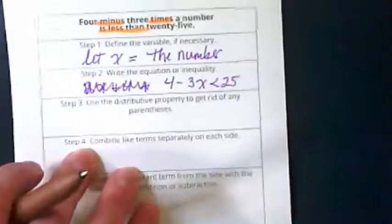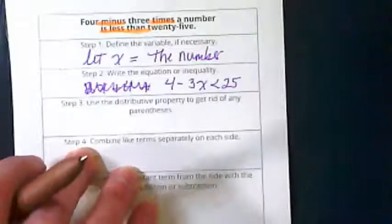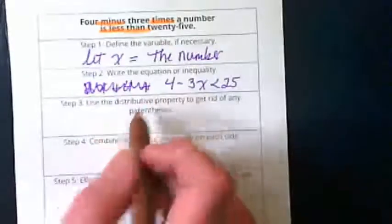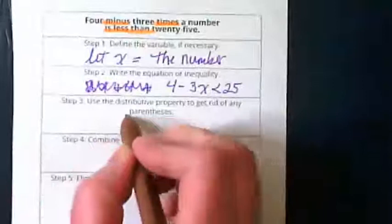Okay, so looking at 4 minus 3 times a number is less than 25. Do we have to distribute here? No.